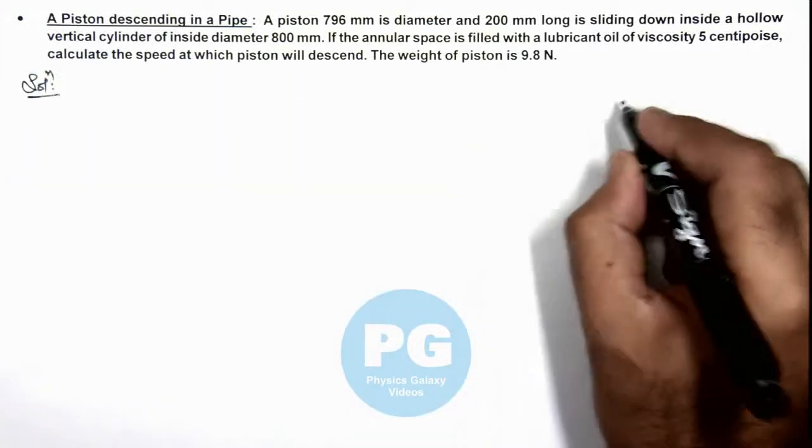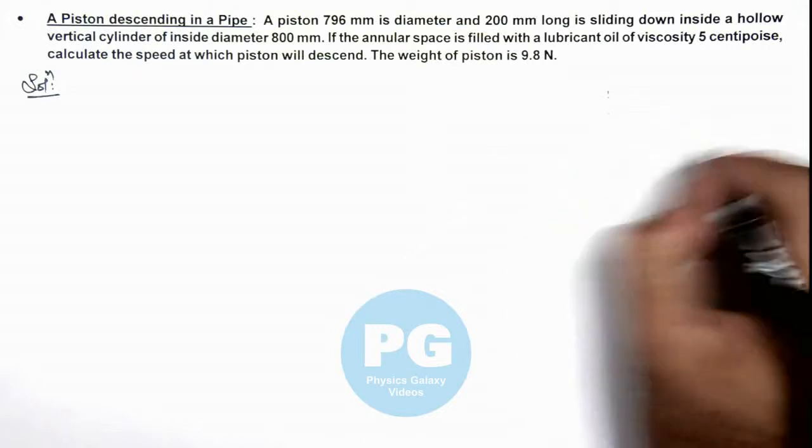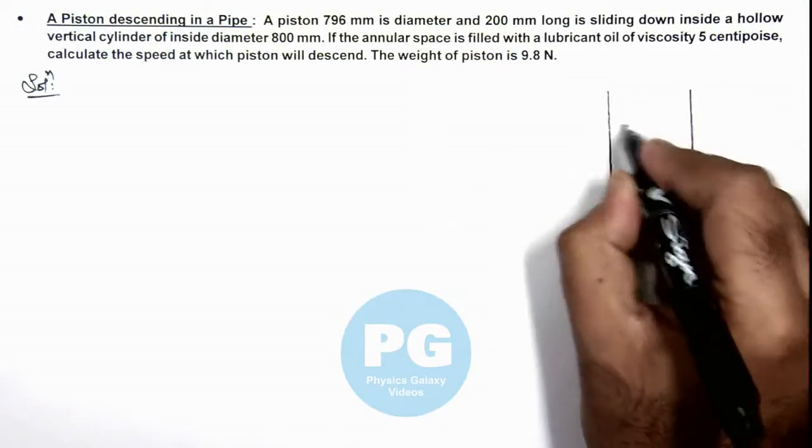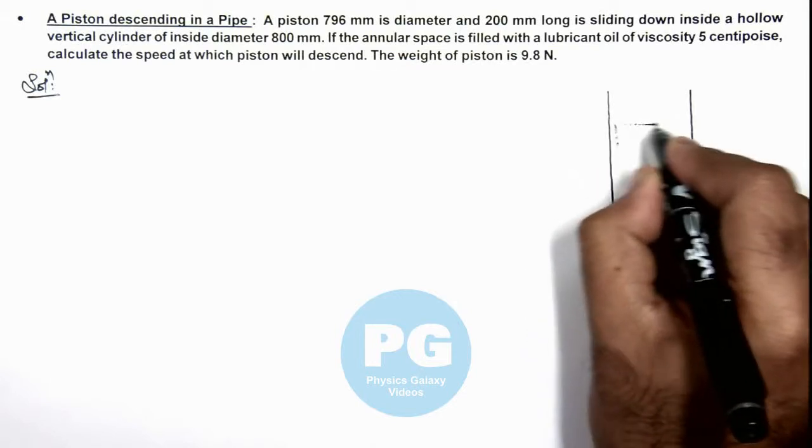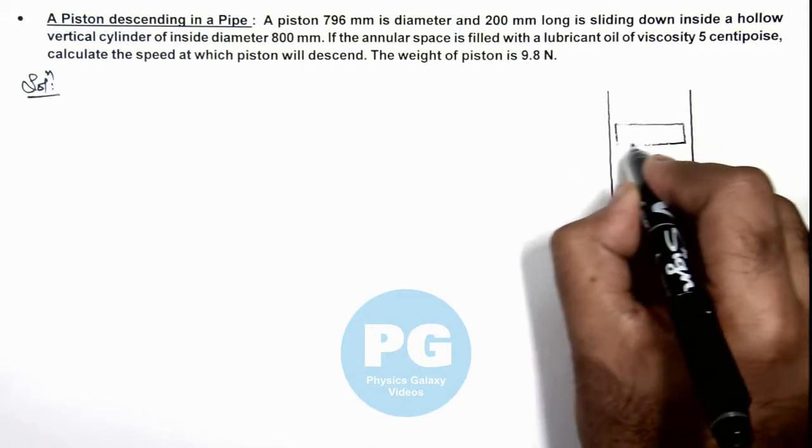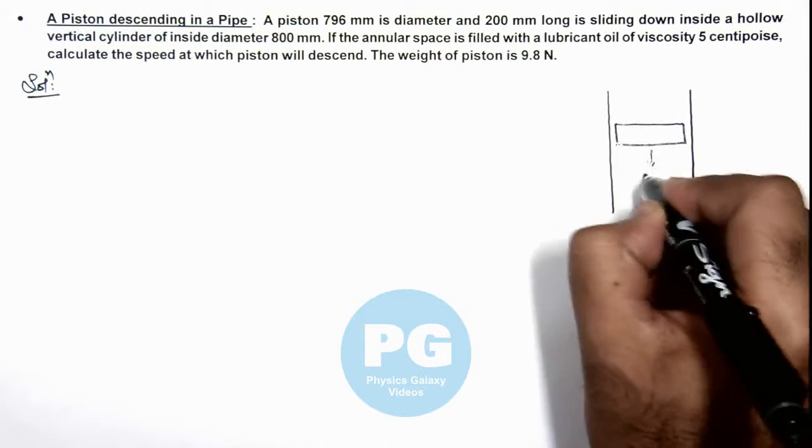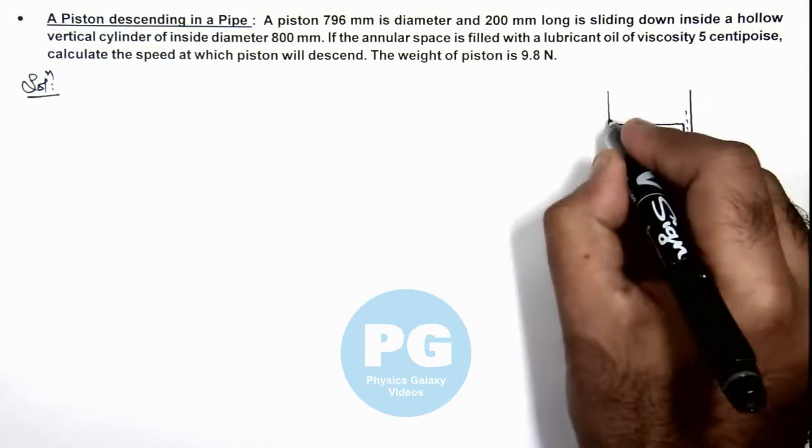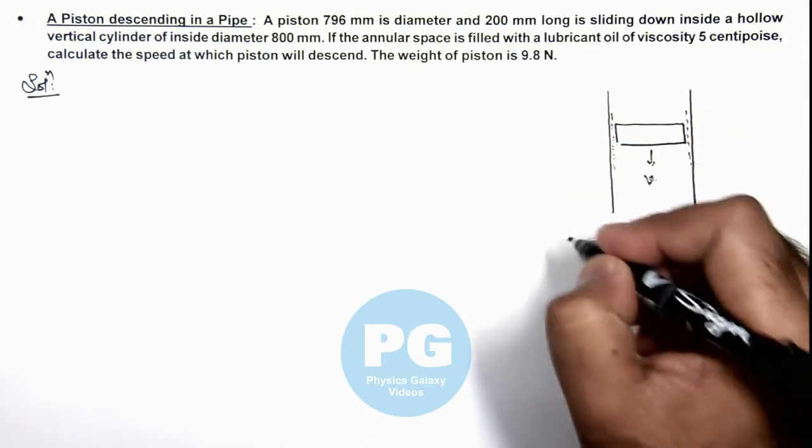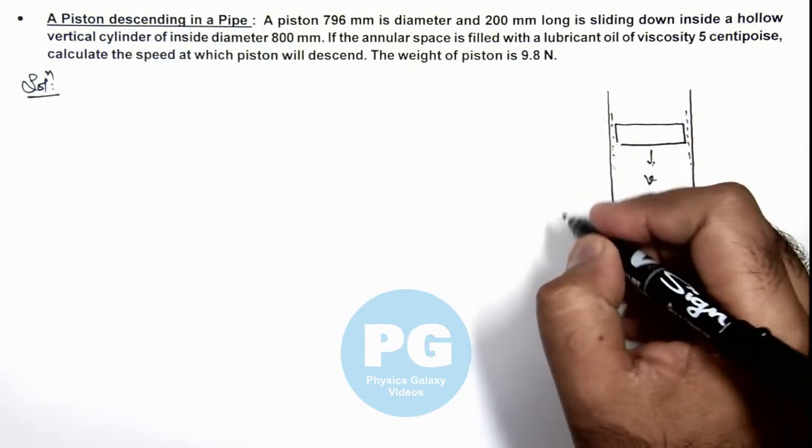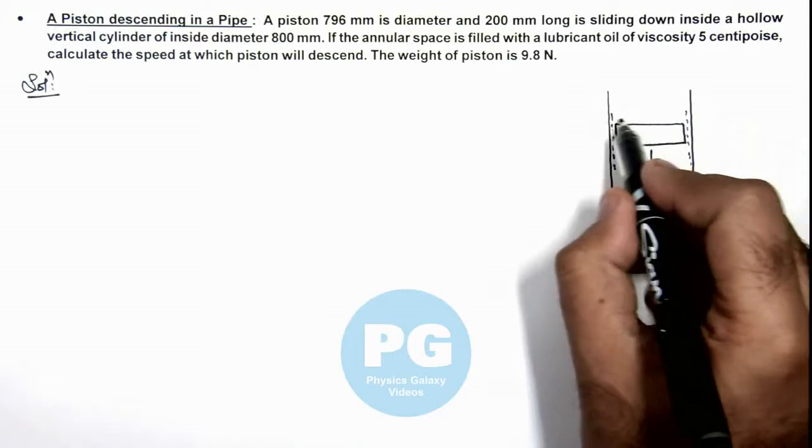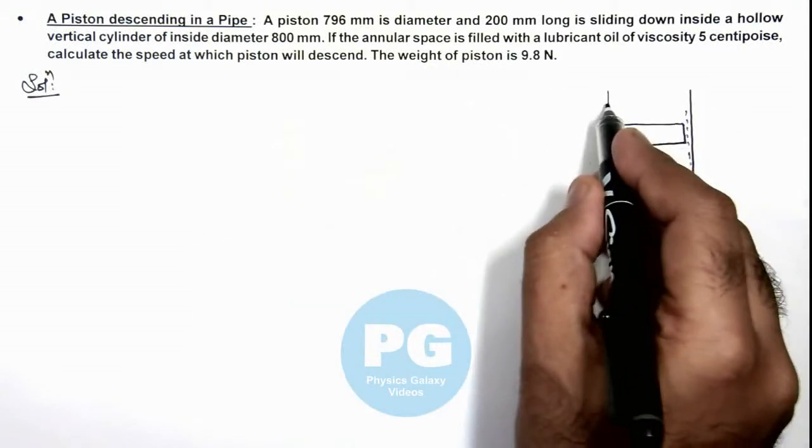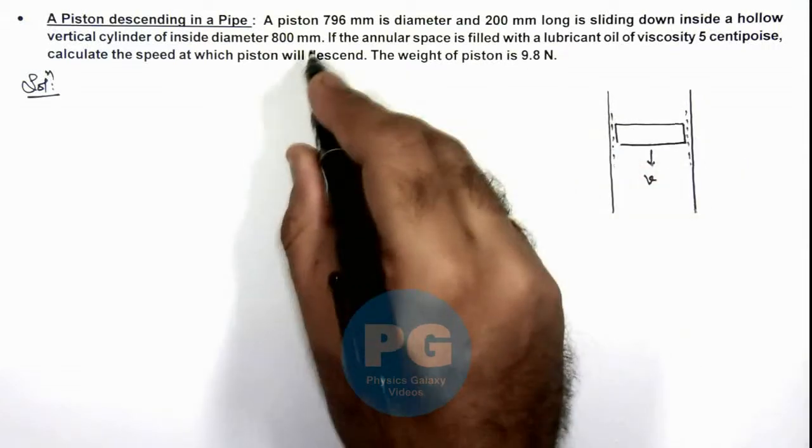Here we can analyze the situation by drawing a figure. We are given that there is a pipe in which there is a piston which is descending down at a speed v. And in this annular region there are lubricants. We are given that the diameter of piston is 796 mm and the diameter of pipe, inside diameter of pipe, is 800 mm.